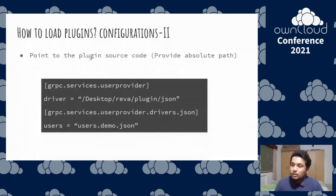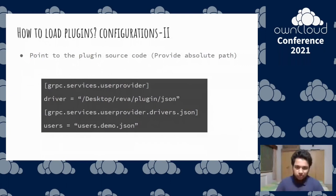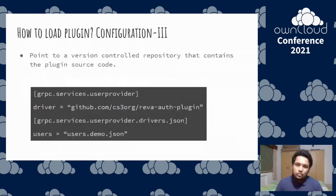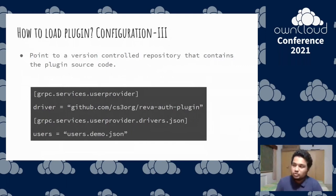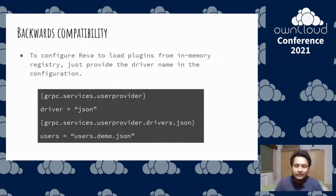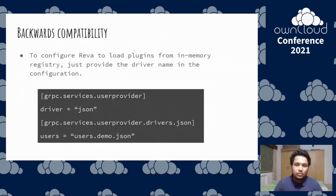If you have plugin source code and want Reva to compile it, you can do that too — just point to the Go package and Reva will compile the source code into a binary and then load it. Finally, if you have a version control repository containing your plugin source code, you can just mention the URL of that plugin and Reva will download and load it at runtime. We also support backwards compatibility — the older method of loading plugins from the in-memory registry is still supported. You just provide the name of the plugin and it loads.